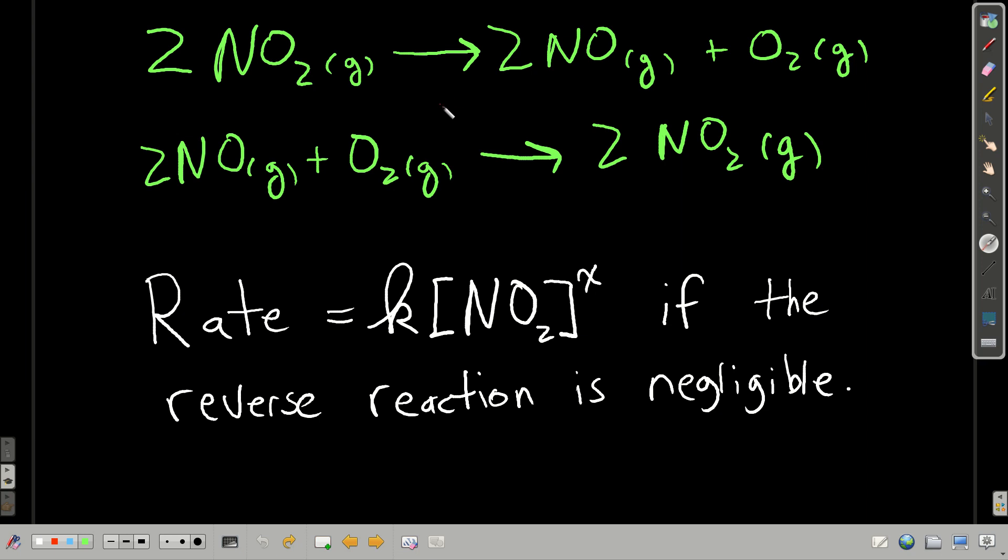If we start out, we take our reaction vessel, and we don't have any nitrogen monoxide or oxygen in there, and we add some nitrogen dioxide, bring it to whatever temperature, 300 Celsius or whatever, and let it start dissociating. Right at that point, the initial rate is only going to depend upon how much nitrogen dioxide there is.